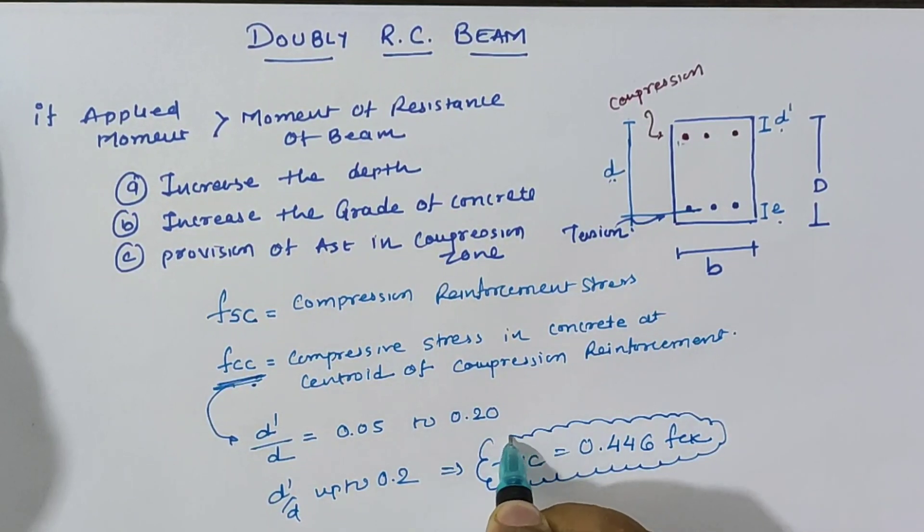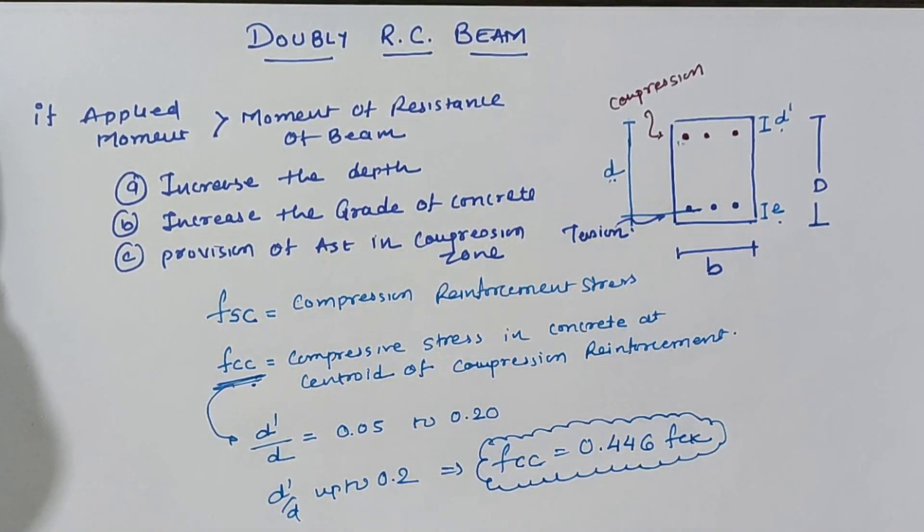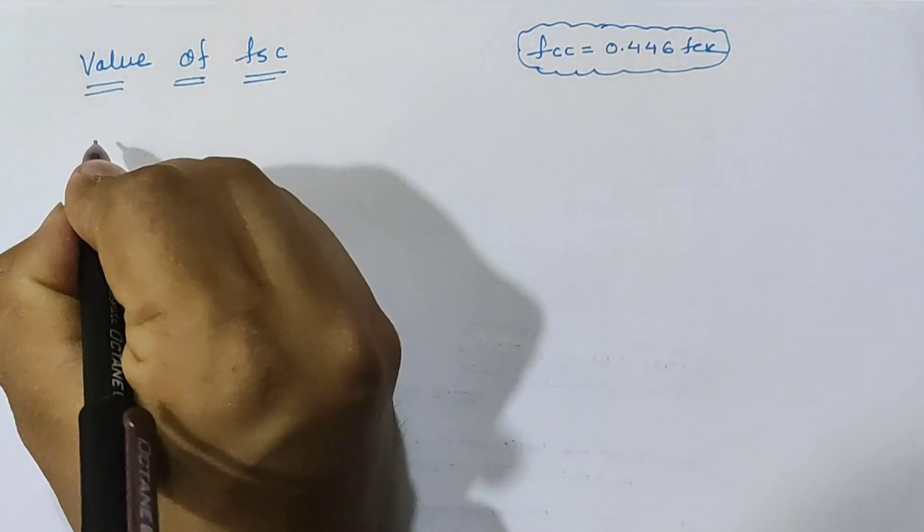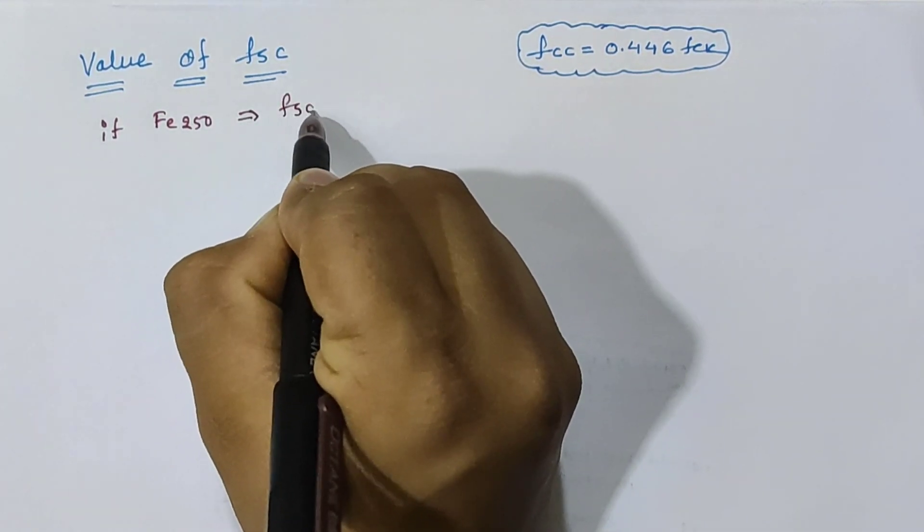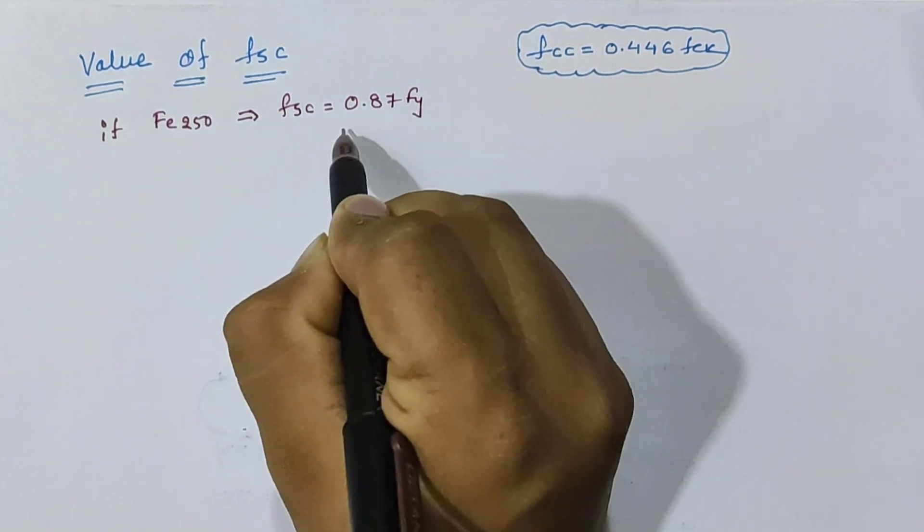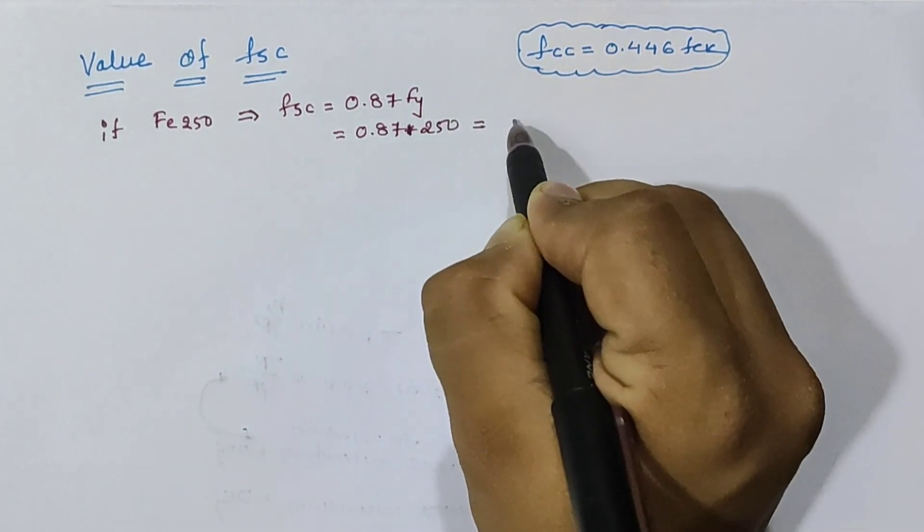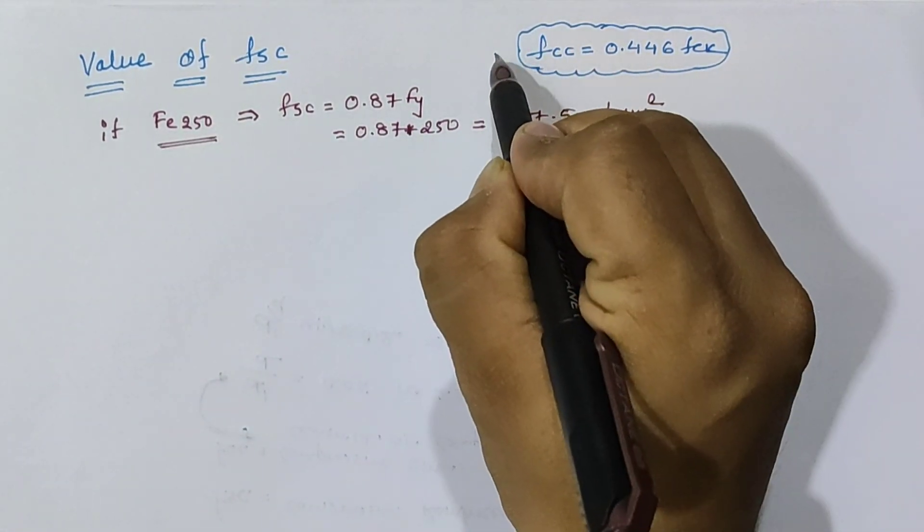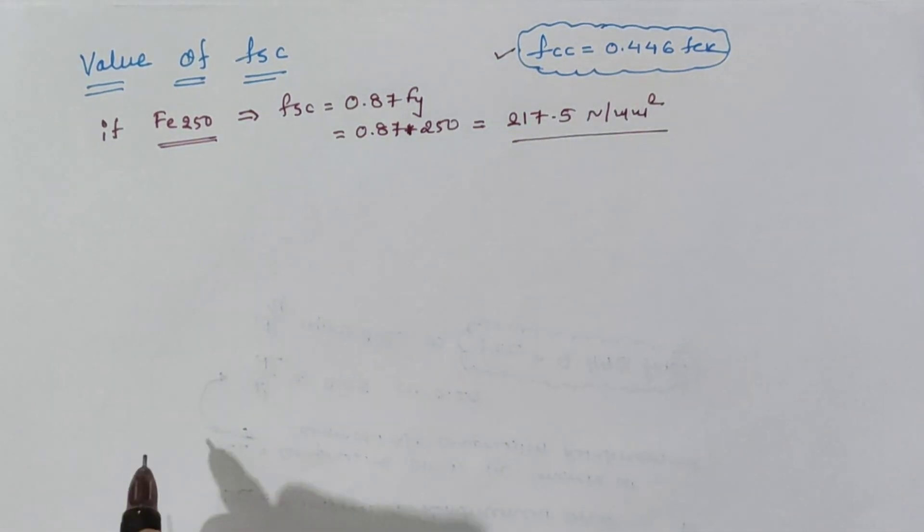Now for the value of fsc: if Fe250 grade of steel is given, then the fsc value is taken as 0.87 times fy, which equals 0.87 times 250, equal to 217.5 N/mm². So in calculation of Fe250, fcc value is 0.446 fck and fsc is 217.5 N/mm².